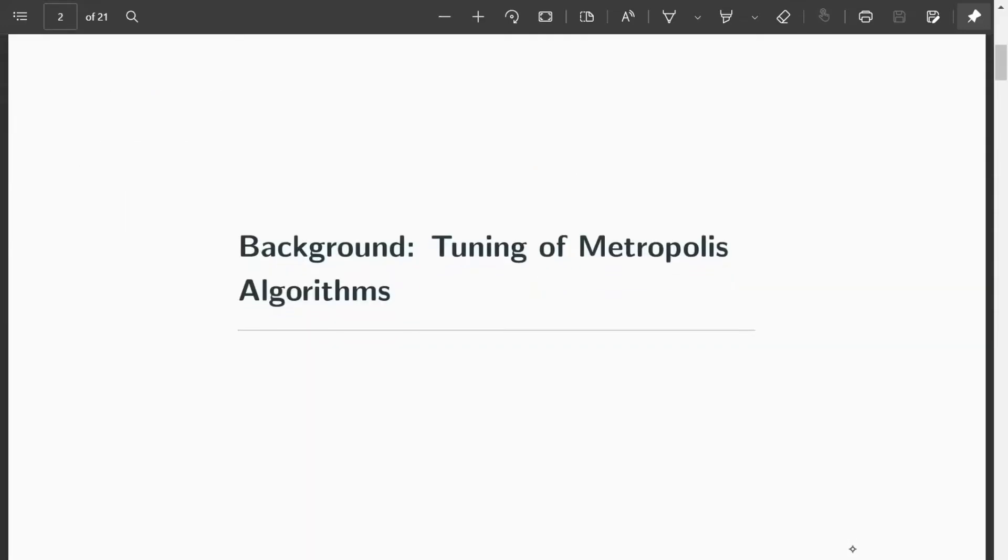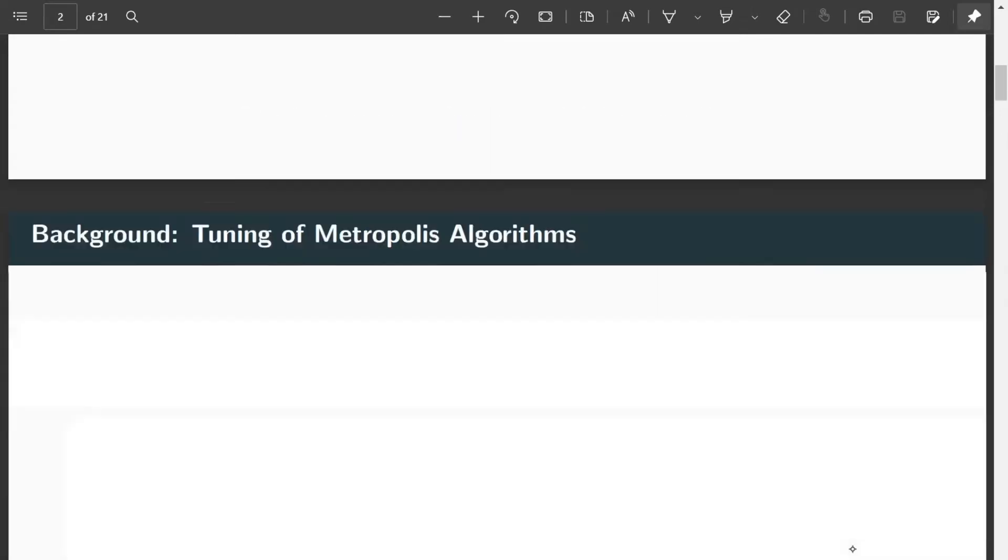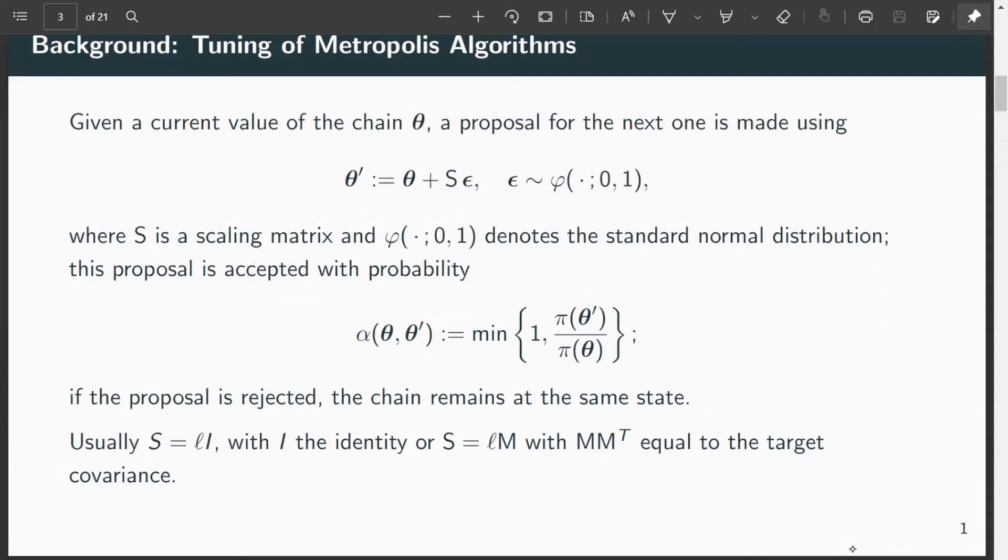To set the scene, let's recall some basics about Metropolis algorithms. A Metropolis algorithm is a Markov chain Monte Carlo algorithm where based on some current state theta, you propose a new state by sampling a normal distribution, written here as a standard normal distribution times the scaling matrix S.